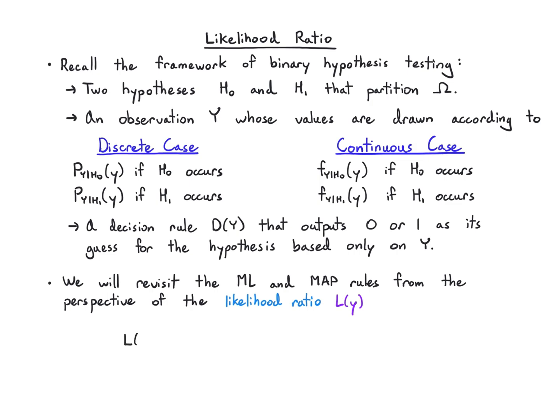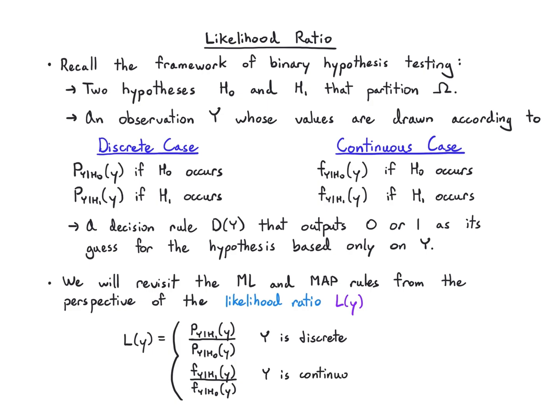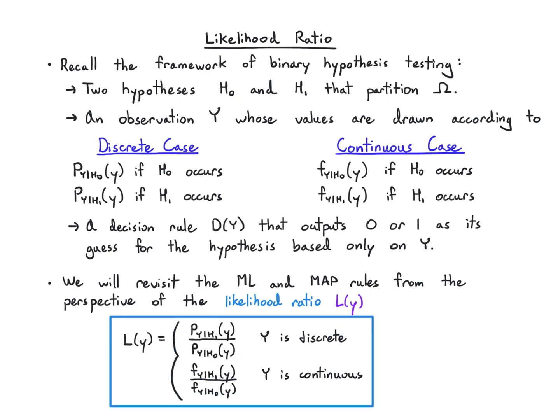We're going to call this L(Y), and L(Y) is just P of Y given H1 divided by P of Y given H0 in the discrete case, and f of Y given H1 divided by f of Y given H0 in the continuous case. So all we're doing is taking a ratio of these conditional probability models. We use this to specify the ML and MAP rules, and in many cases it allows us to really simplify the decision rule and get a more general framework.